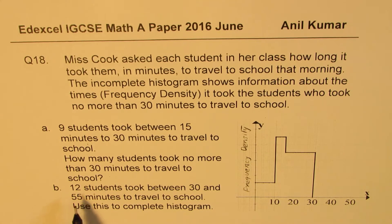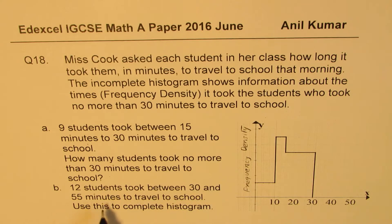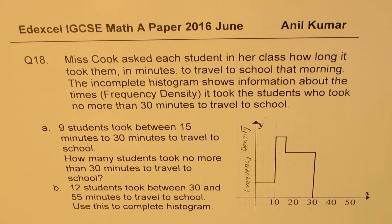Part B: 12 students took between 30 and 55 minutes to travel to school. Use this to complete the histogram. I'd like you to pause the video, answer this question, and then look into my suggestions.